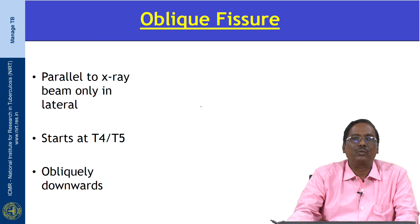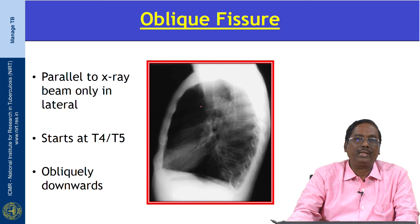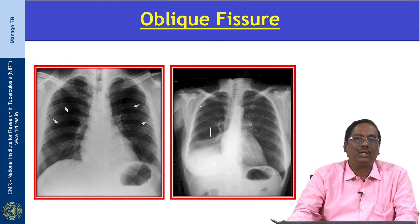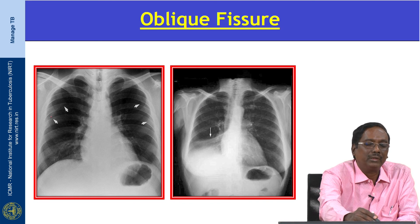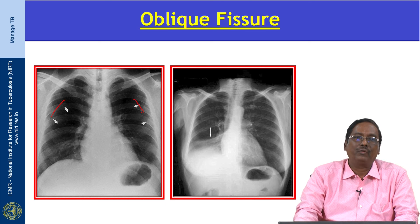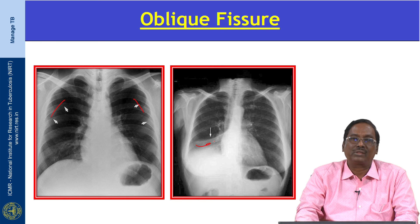The oblique fissure is usually not seen in the frontal view; it is seen only in the lateral view because it runs parallel to the X-ray beam. It starts at T4 or T5, runs downward obliquely through the hilum, and reaches the diaphragm. When the underlying lung is diseased, the oblique fissure can be seen in the PA view. This X-ray shows a right lower lobe collapse — in right lower lobe collapse, the oblique fissure comes into the picture.